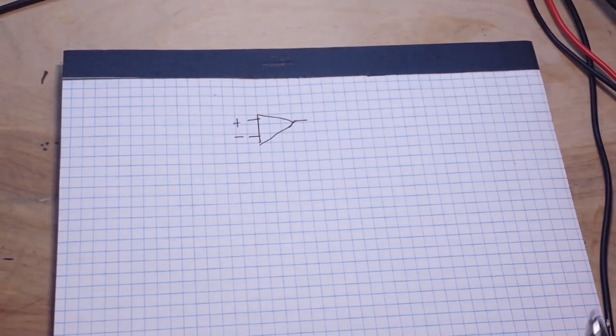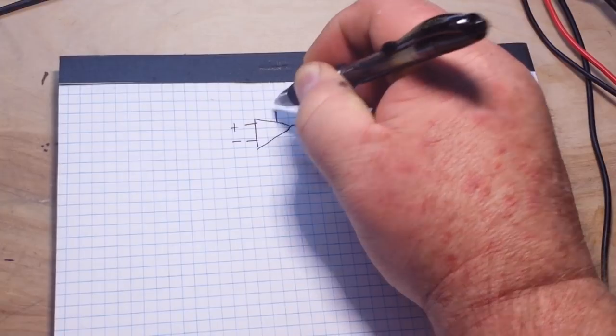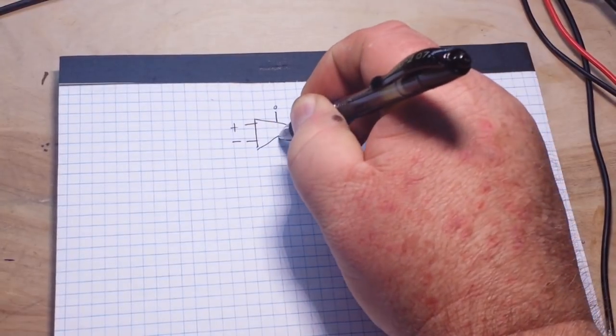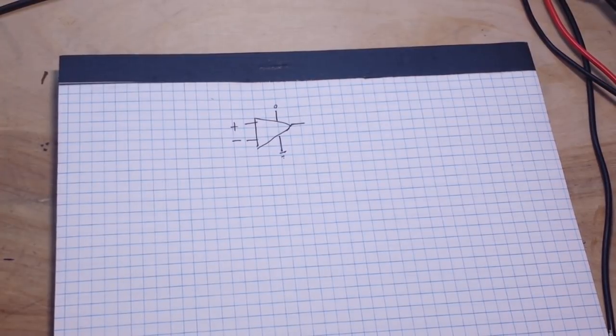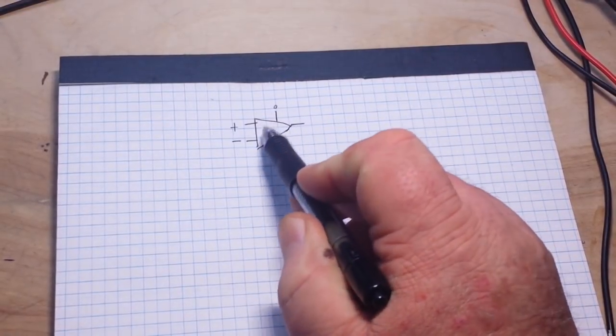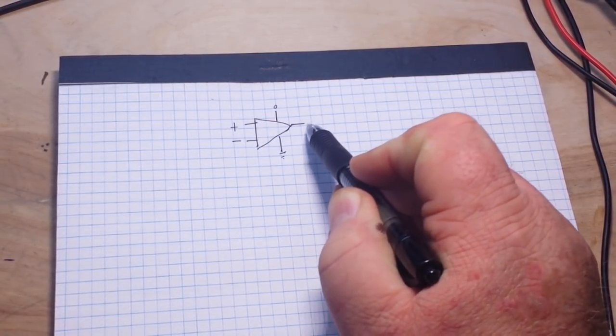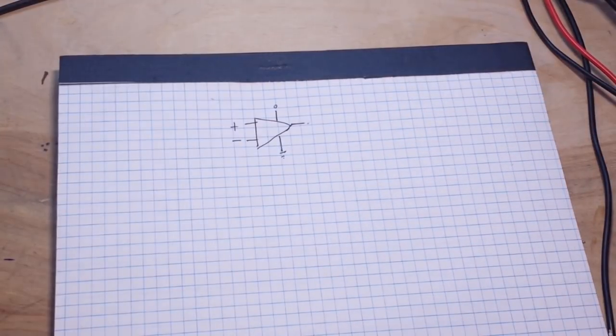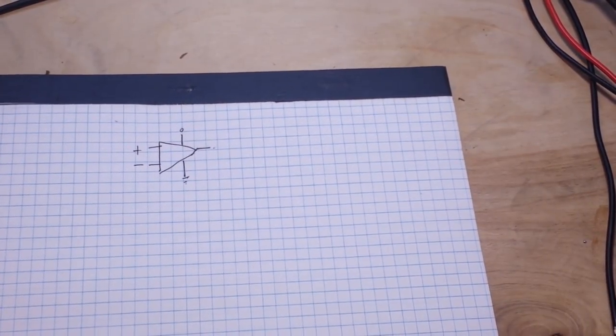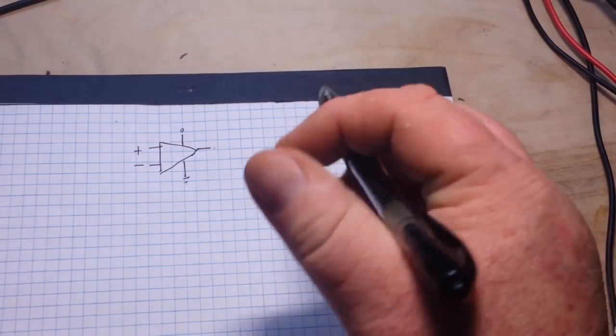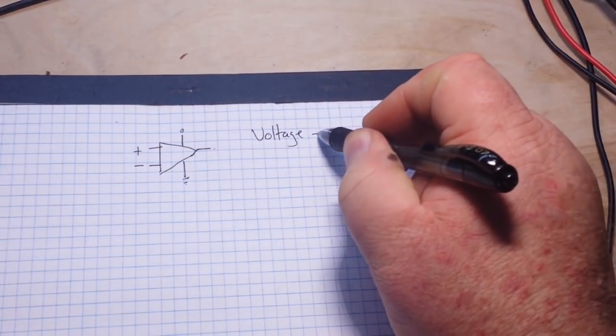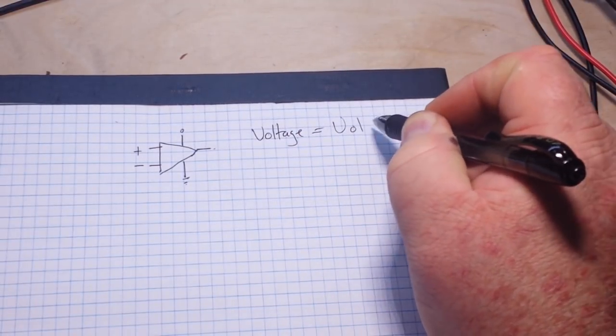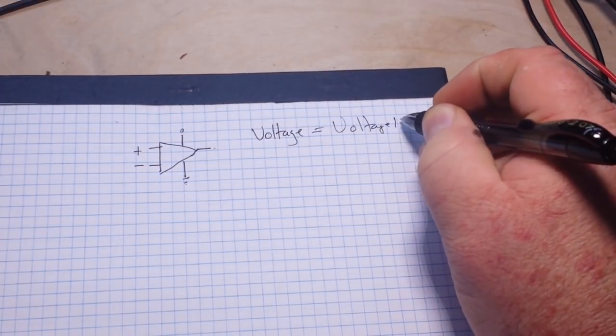Now in practice, we also have a V plus and a ground there, but you already knew that, right? So the amplification - op amp gets an operational amplifier, so there's going to be some form of amplification that comes through the output.